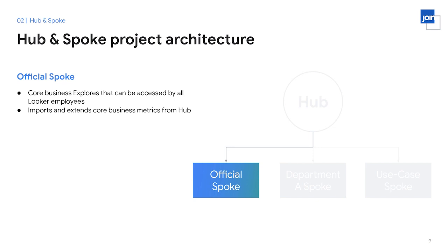The Official Spoke is a project that has all of the core business explorers, accessible by all Looker employees, containing metrics used company-wide. At Looker internally, this is where our core sales explorers live. These explorers contain fields reused across various departments, such as total revenue or the classification of a current customer — fields used across customer success, engineering and product, and marketing.